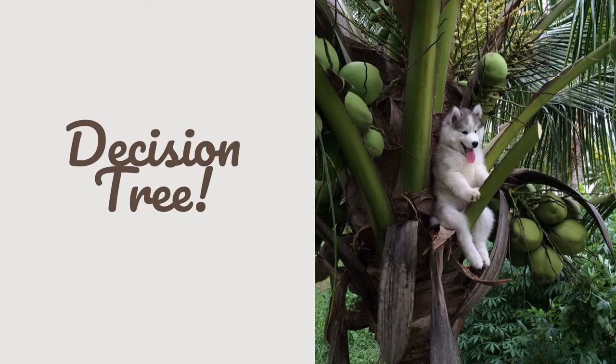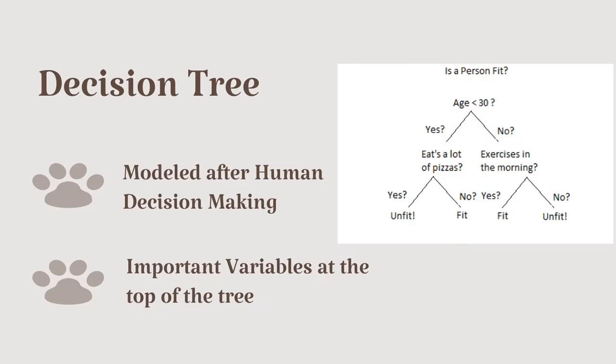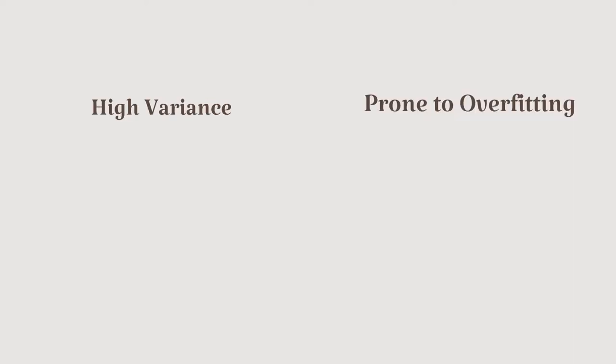We will make use of a decision tree model. The decision tree model imitates how a human makes decisions. At each node, the variable that provides the most information is chosen to partition the data. The most important variable is at the top of the tree. However, decision trees have very high variance and are very prone to overfitting our data.